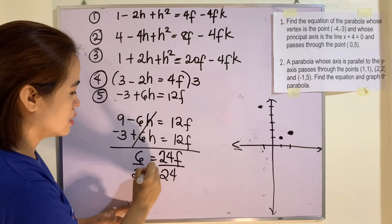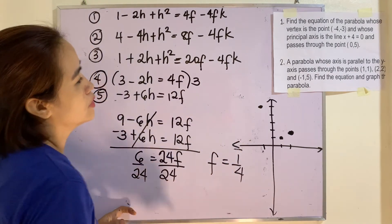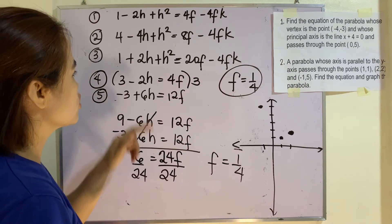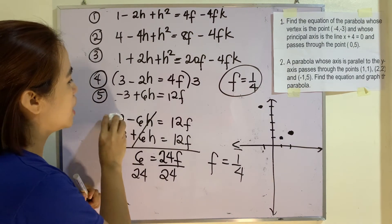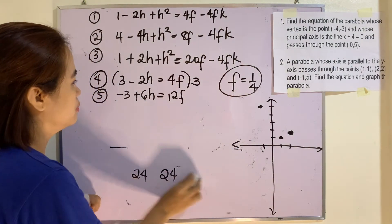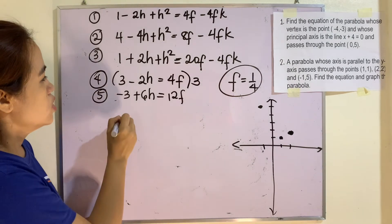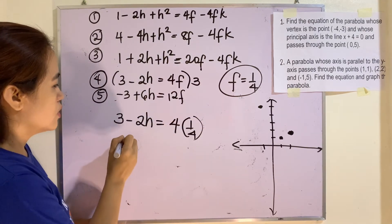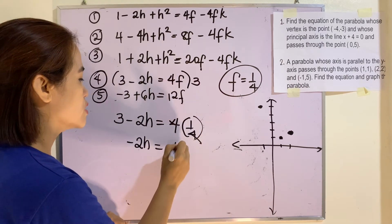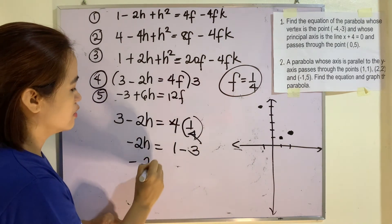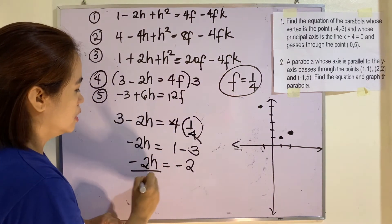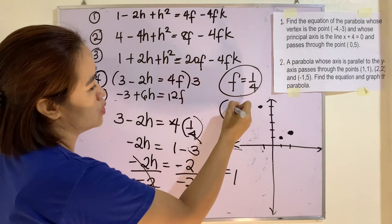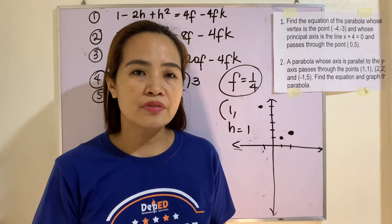Now we solve for h using Equation 4. Substituting f = 1/4: 3 - 2h = 4(1/4) = 1. So -2h = 1 - 3 = -2, giving h = 1.